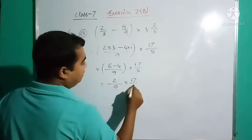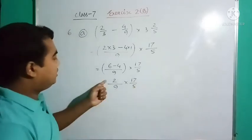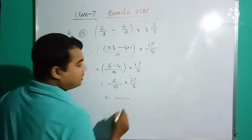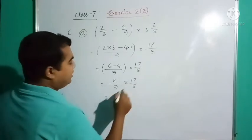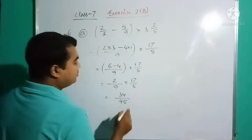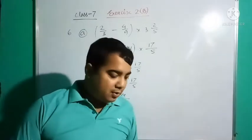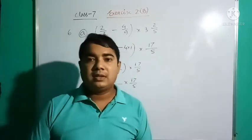6 minus 4 is 2, 9 into 17/5. Next line: 6 minus 4 is 2, 9 into 17/5. There is no cancellation, so multiply numerator with numerator and denominator with denominator. 2 times 17 is 34, 9 times 5 is 45. This is your answer.